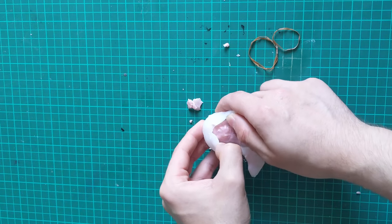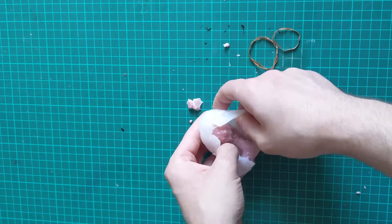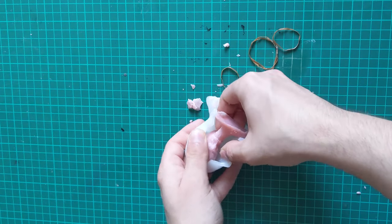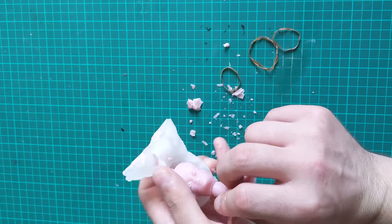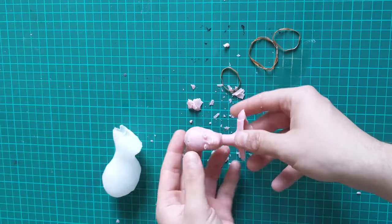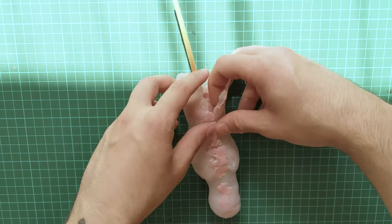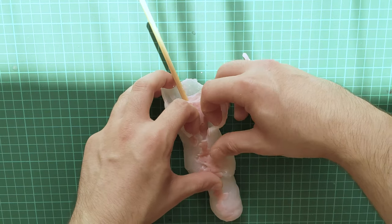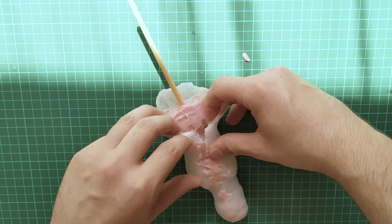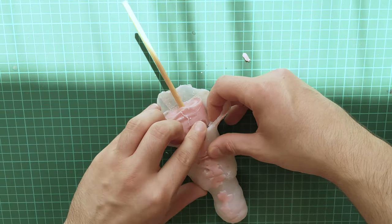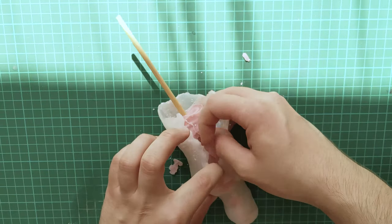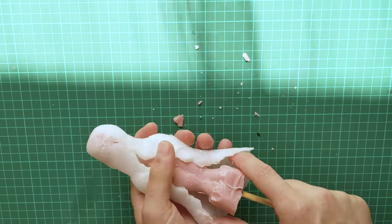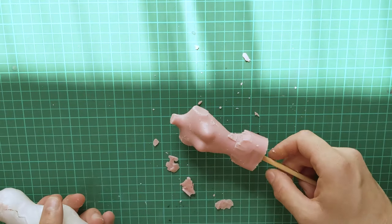The wig block came out of the mold great, except for a few air bubbles which we can fix later. The mannequin, on the other hand, had a bit of an accident.